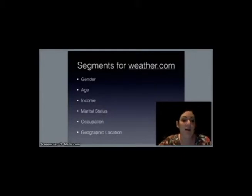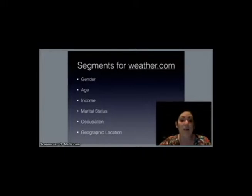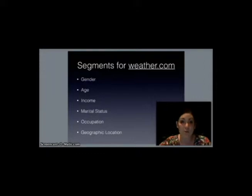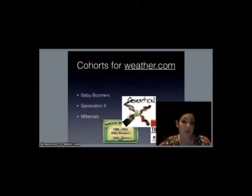For our segments for weather.com, we want to look at gender — male and female. We want to look at their age groups: 20 to 30, 30 to 40, and those over 50. Their income: medium, medium to high, and high. Marital status, occupation — salary paid professionals versus college students. And we want to look at those that live in warmer climates year-round versus those that live in cooler climates.